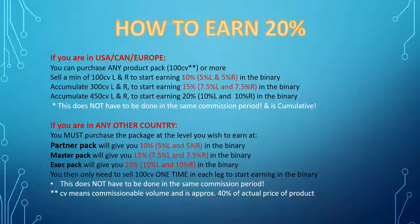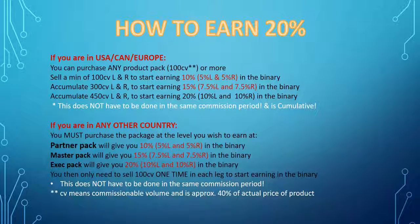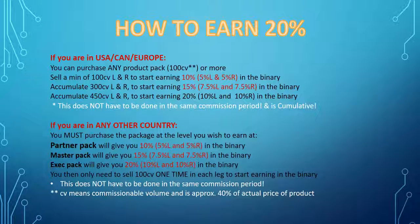Once you have accumulated 300 CV — whether you personally did it or the people downline from you did it — each in your left leg and your right leg, you'll bump up to 15% in the binary. And once you've accumulated 450 CV in the left leg and the right leg, you will earn 20% in the binary. Remember, this does not have to be done in the same commission period; it is cumulative.